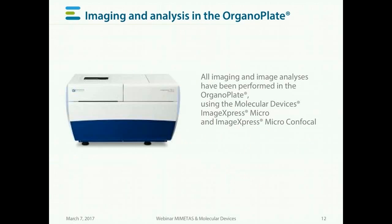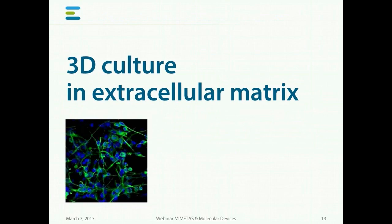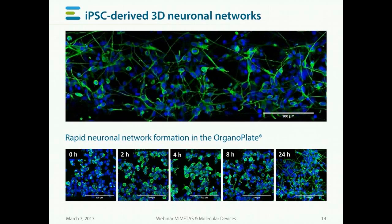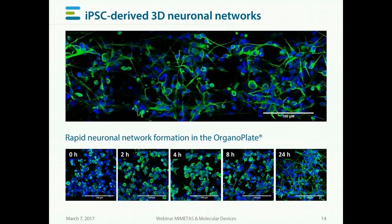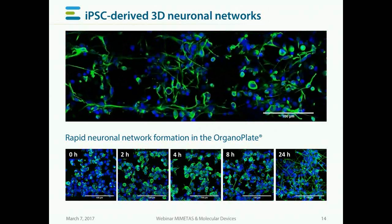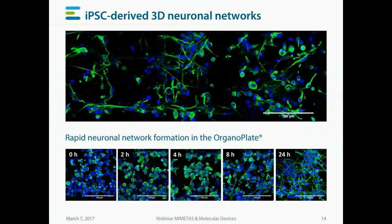All of the imaging is done inside the plate. We either use confocals or plate readers, or if we want throughput and convenience, we use the Molecular Devices ImageExpress Micro and ImageExpress Micro Confocal, which work very well with the organoplate. This is an example of induced pluripotent stem cell-derived 3D neuronal networks, shown as a scan through the confocal stacks in an organoplate. The typical channel length is about 3 mm and height is 120 microns, showing a real three-dimensional neuronal network present in these plates.